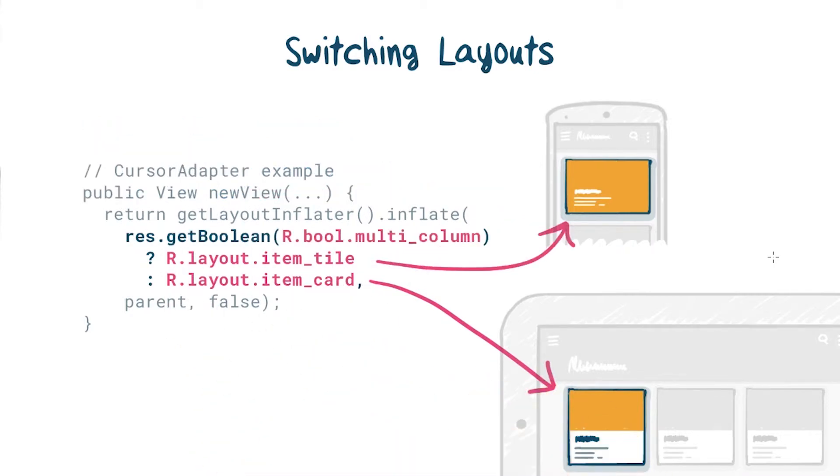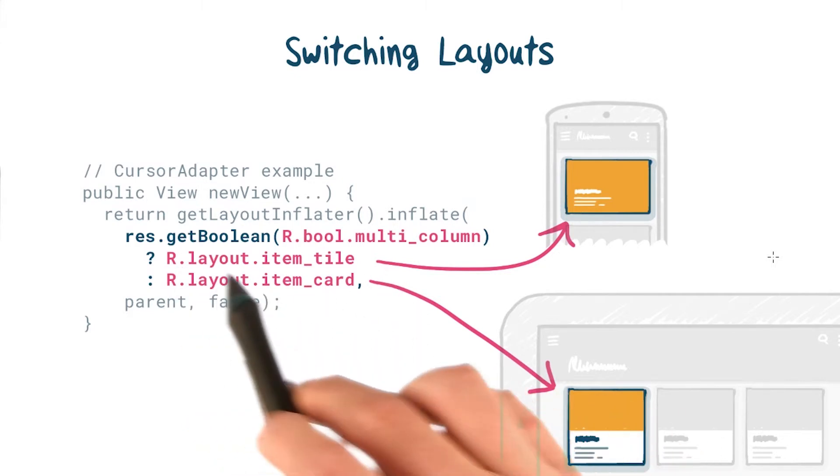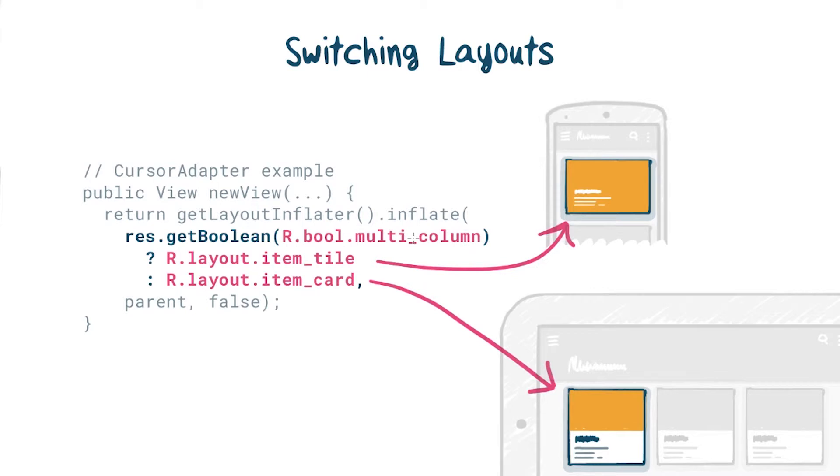It's worth noting that in addition to integer resources, there are also Boolean resources. So you could have a Boolean like multi-column, which defaults to false, but in W600DP gets set to true. And then you could decide to use a tile versus a card type list presentation.